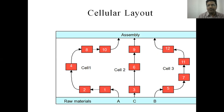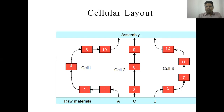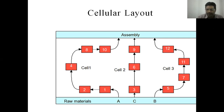The fourth type is cellular layout. In cellular layout, we have different cells for particular products or raw materials. For example, raw material types A, B, and C each go into a particular cell. Each cell performs all the operations required for that material, and then the processed parts go to an assembly area. Different components go through cell 1, cell 2, and cell 3, and all are combined in the assembly area and sent out.